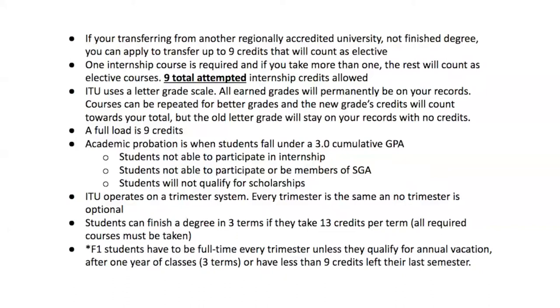A full load is nine credits. Academic probation occurs when students fall below a 3.0 cumulative GPA. If on academic probation, you cannot participate in internships, be a member of SGA, or qualify for scholarships. ITU operates on a trimester system — every trimester is the same and none is optional. Students can finish a degree in three terms taking 13 credits per term, though all required courses must be taken. Students must be full-time every trimester unless they qualify for annual vacation.